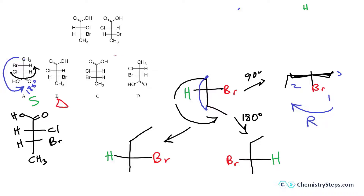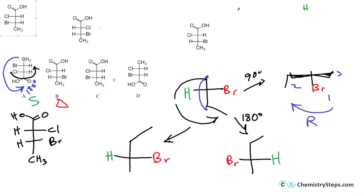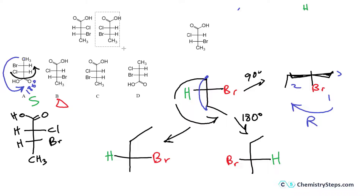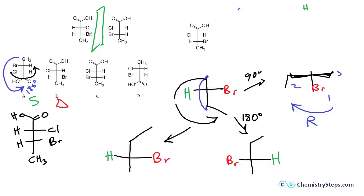Looking at option C: we notice that all the stereocenters are reflected through a mirror — it is the non-superimposable mirror image of the compound. The Cl's are reflected, the Br's are reflected, and therefore this is the enantiomer of the compound.